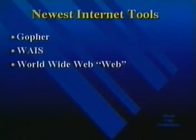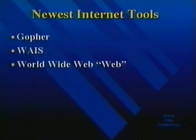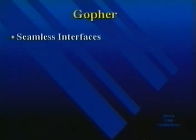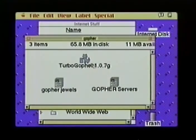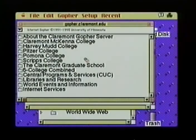The next three tools — Gopher, WAIS, and WWW — are more recent internet tools that combine the resources of many information sources with more user-friendly interfaces. Let's start with Gopher, developed at the University of Minnesota, which makes accessing other computers and their software on the internet as easy as point and click. With Gopher, you don't need to know IP addresses, domain names, FTP commands, or how to access Archie. To run Gopher from an Ethernet-connected Mac, I'll use TurboGopher. When I start this free application, I am connected to my local Gopher server and a menu appears.